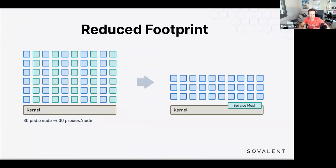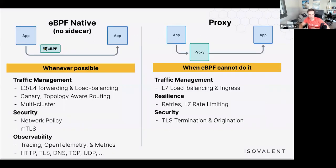The sidecar-free mode brings a reduced footprint — instead of one proxy per pod, you run one per node. This massively reduces memory and compute resources since you don't need to bootstrap a new proxy every time you start a pod or shut it down when the pod terminates. What can be done entirely in eBPF with no proxy: traffic management at layer 3/4, load balancing, canary rollouts, topology-aware routing, multi-cluster capabilities, network policy, and TLS.